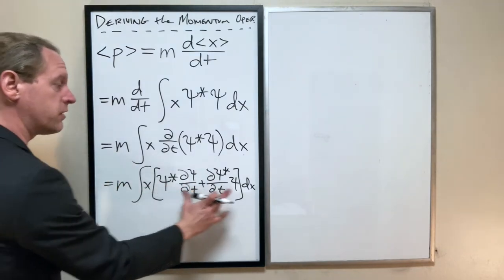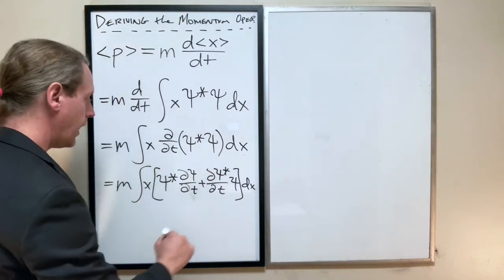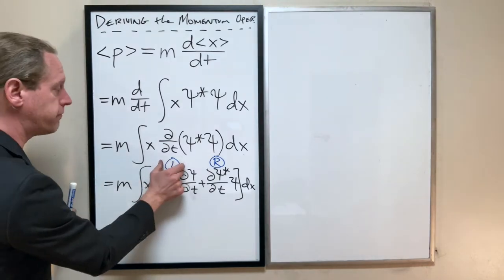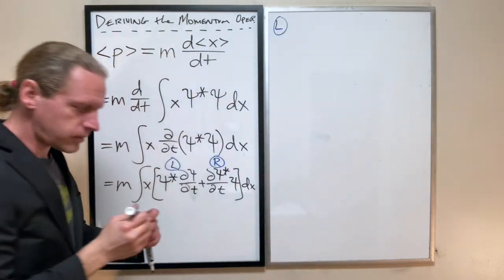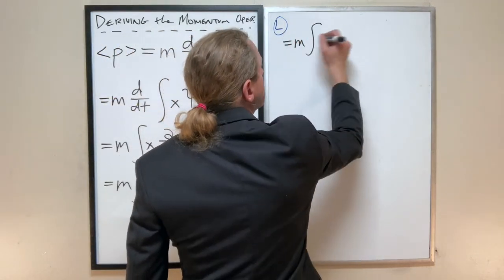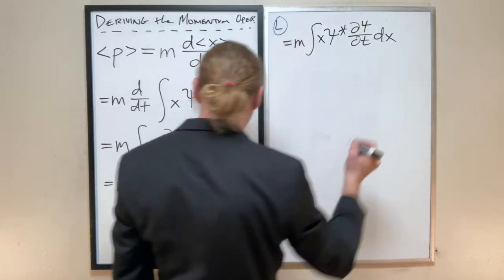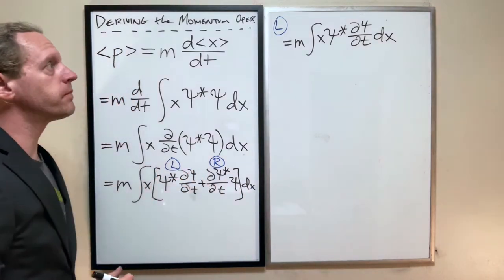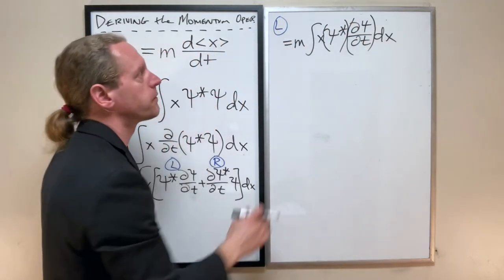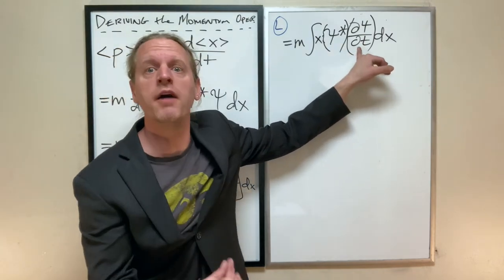Now this is really two integrals. So I'm going to treat the first term as an integral of its own. Specifically, I'm going to call this the L term and I'm going to call this the R term. I'm strictly going to focus on the L term first. So for the L term, it equals M times the integral of X Psi star dPsi/dt. So it's the complex conjugate of our function Psi times the time derivative of our normal function Psi.